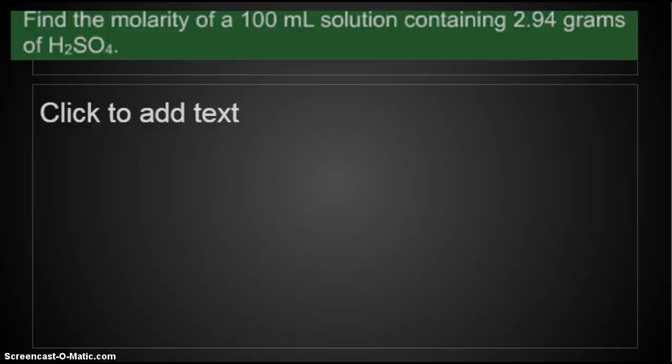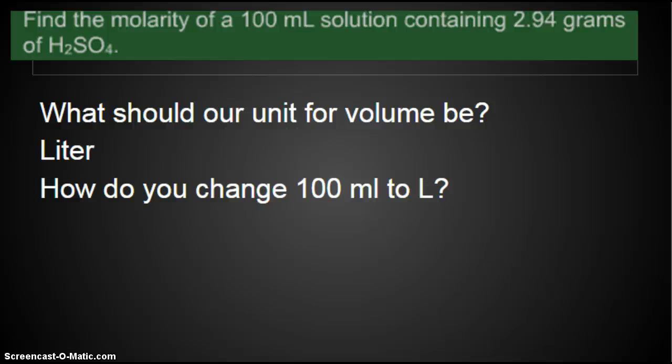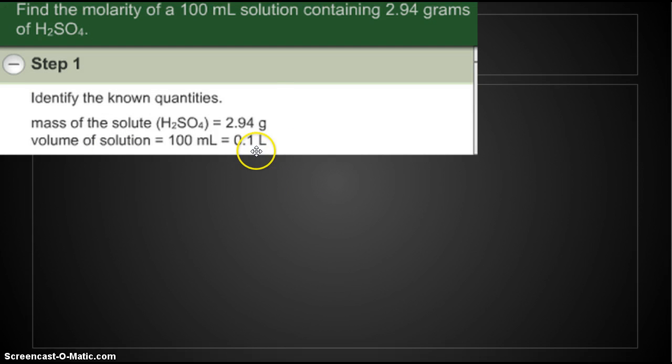Find the molarity of a 100 mL solution containing 2.94 grams of H2SO4. What should our unit for volume be? Our unit for volume for molarity is liters. How do you change 100 milliliters into liters? You move the decimal three places to the left. So it would become 0.1 liter. We write down what we know. We have 0.1 liter of solution and 2.94 grams of our solute.